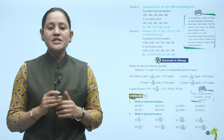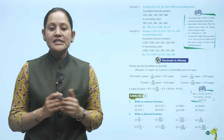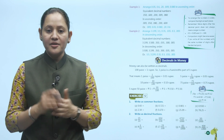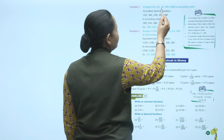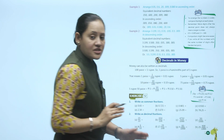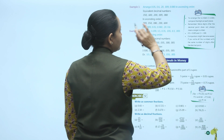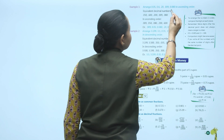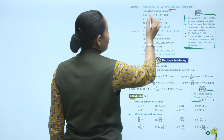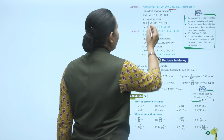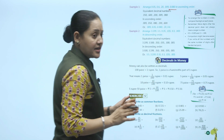Next example: arrange 0.05, 0.6, 0.20, 0.009, and 0.080 in ascending order. First, make them equivalent decimals with the same number of decimal places — the maximum is 3. So we write: 0.050, 0.600, 0.200, 0.009, 0.080. Now compare starting from the smallest.